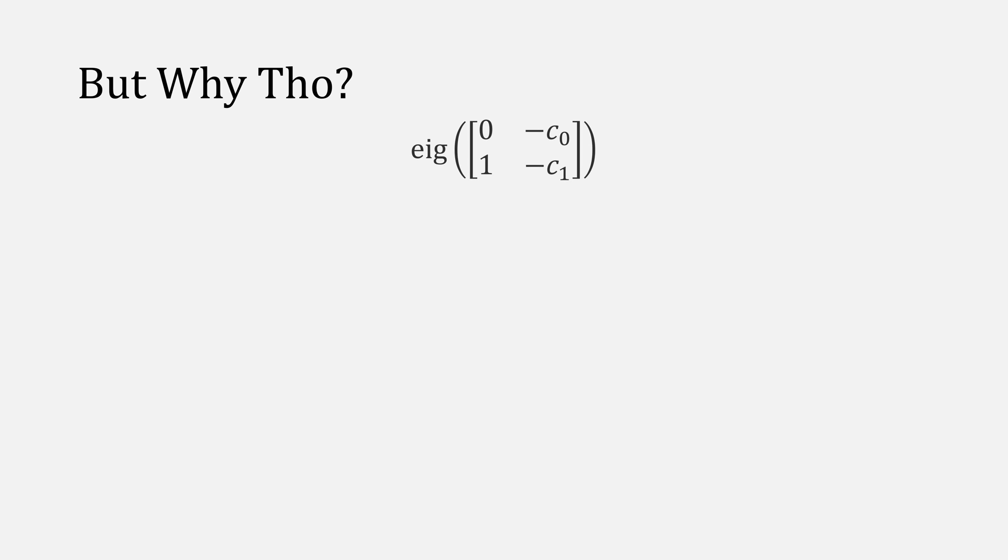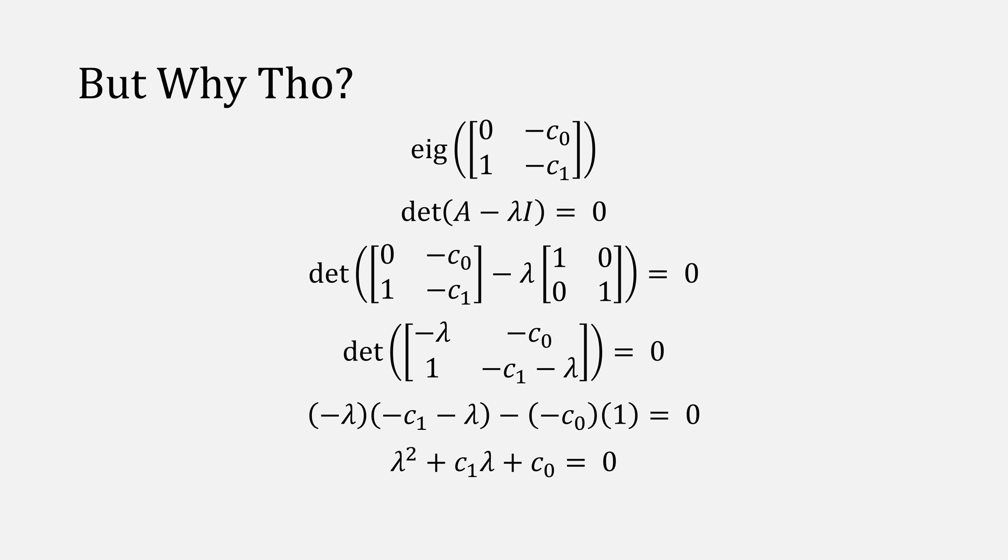But why, though? If we take the eigenvalues of the companion matrix and leave everything in terms of coefficients, and we solve for the eigenvalues using the determinant approach, what we're left with is this polynomial of lambda squared plus the first coefficient times lambda plus the second one.